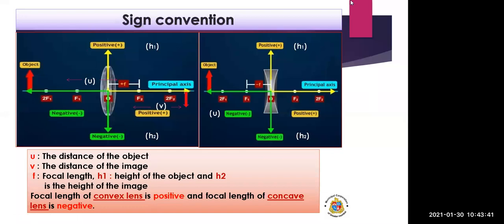Today let's start with the sign conventions. Yesterday we saw how to draw ray diagrams for concave and convex lenses. Today we'll study sign conventions and different formulas. U is the distance of the object, V is the distance of the image, F is the focal length, H1 is the height of the object, and H2 is the height of the image.